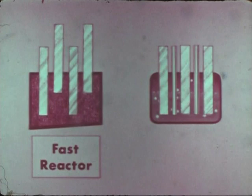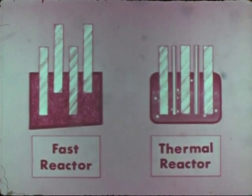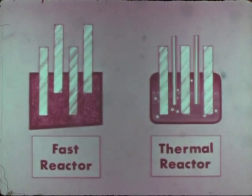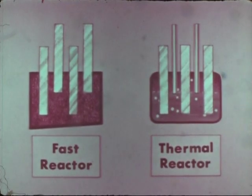Reactors which use a moderator such as water to slow the neutrons to thermal velocities are called thermal reactors. Thermal reactors are usually controlled by rods of cadmium or a similar neutron absorber.